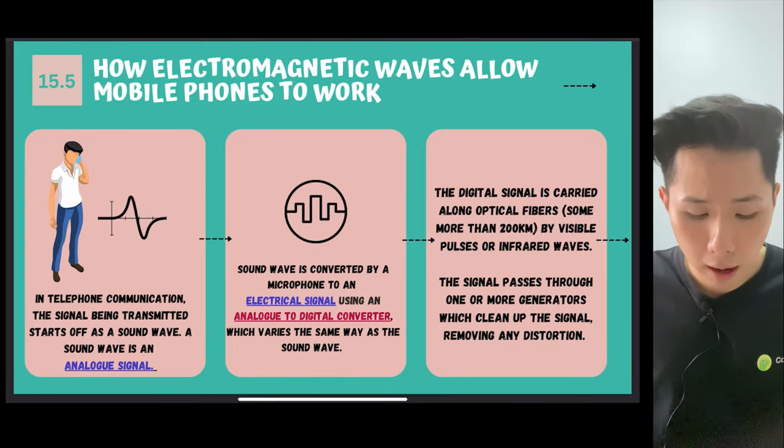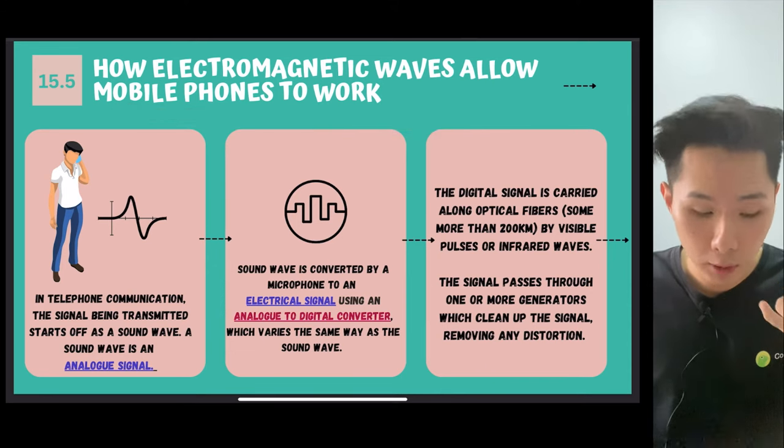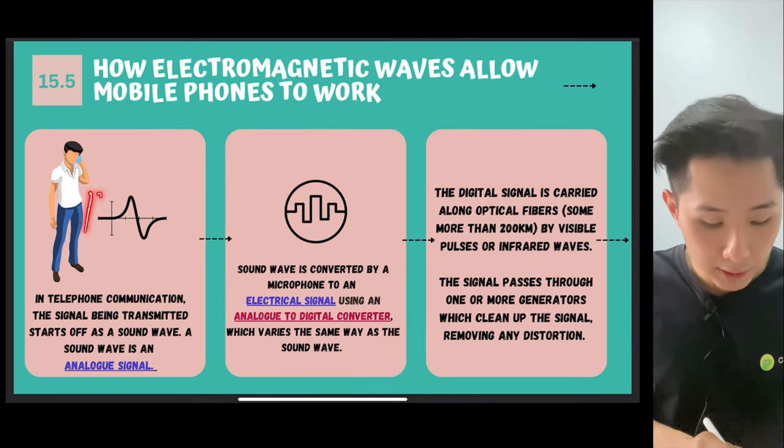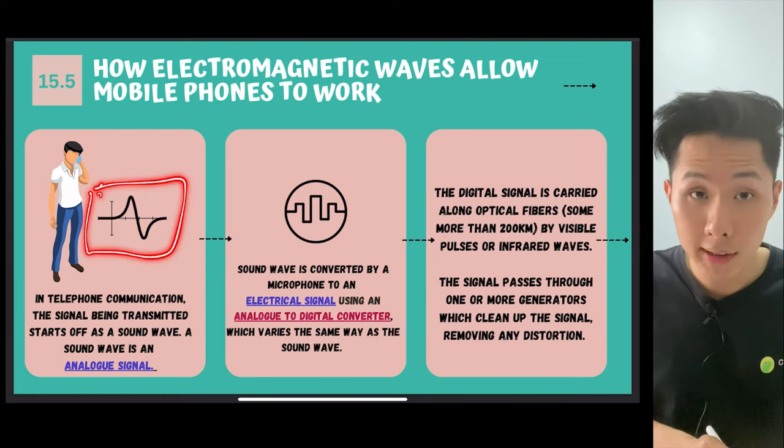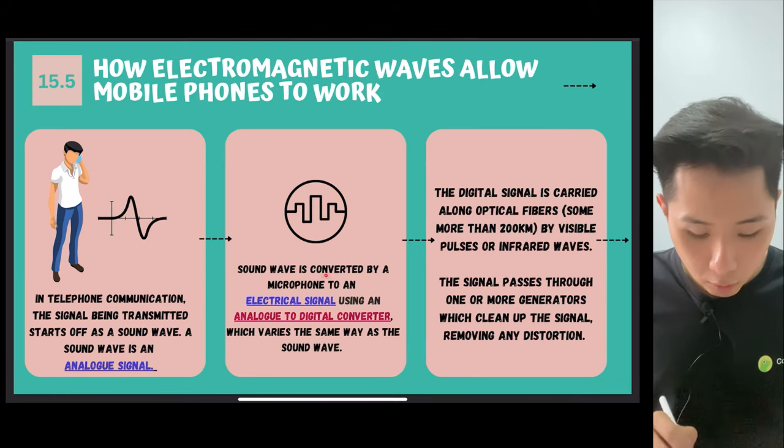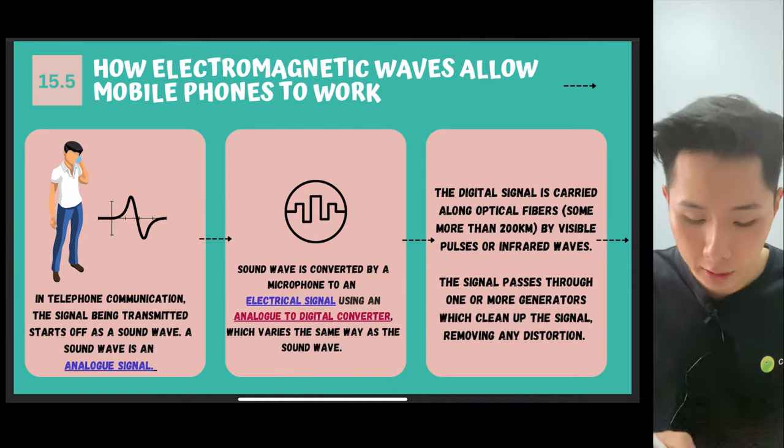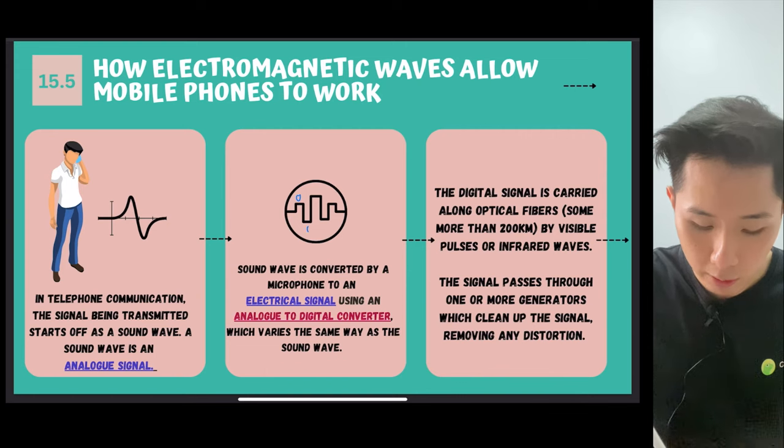So lastly, we look into how electromagnetic wave allow mobile phones to work. So if I were to say something to my mobile phone, I call someone, my voice will first be recorded as an analog signal, which represents how my volume and pitch is. And after that, it will be converted to electrical signal. So these electrical signals in computer science, they are basically just zero and one.